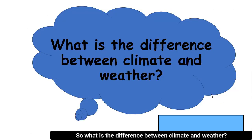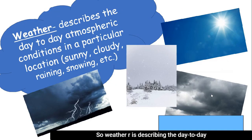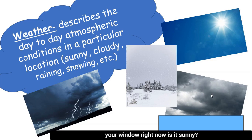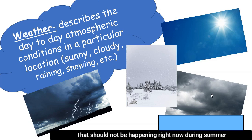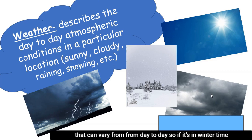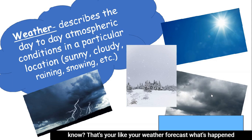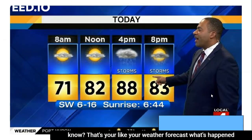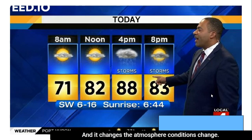So what is the difference between climate and weather? Weather describes the day-to-day atmospheric conditions in a particular location — look outside right now: is it sunny, is it cloudy? That can vary from day to day. In wintertime, weather will be cold and snowy, but that's not constant. Your weather forecast reflects what's happening on a daily basis, and those atmospheric conditions change.